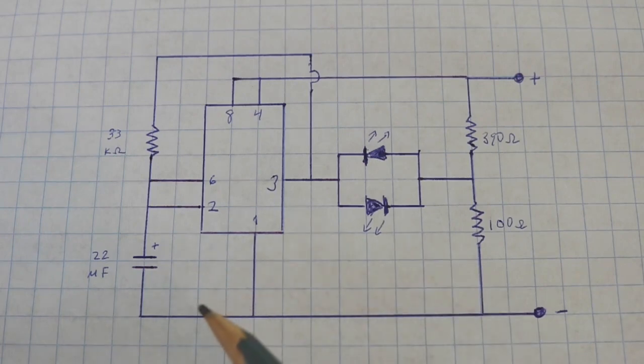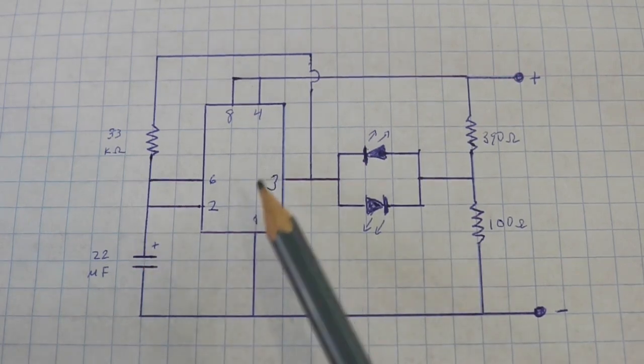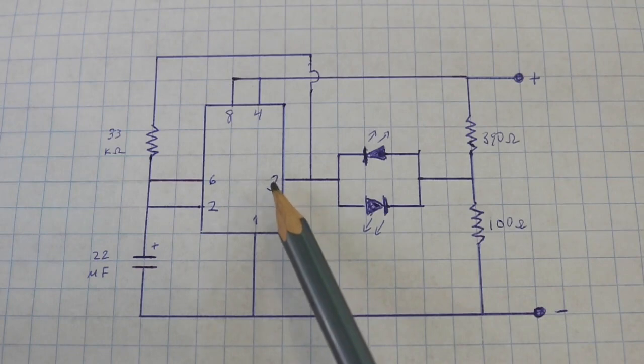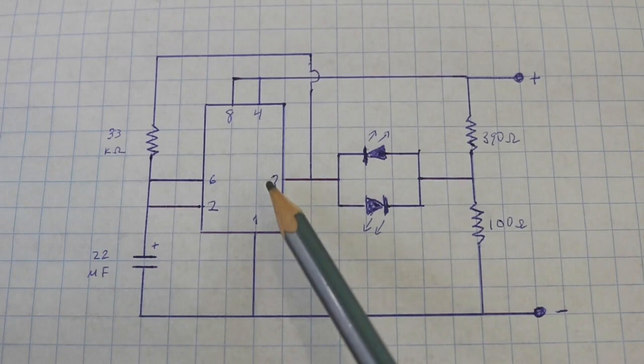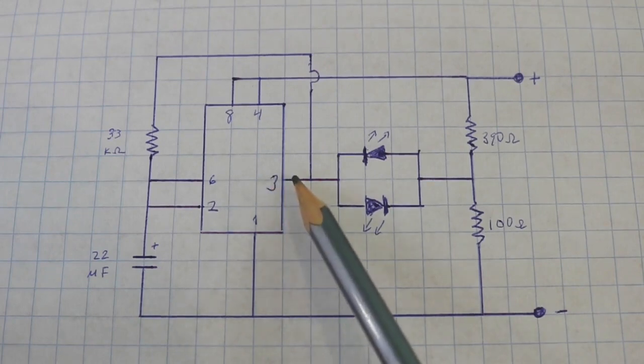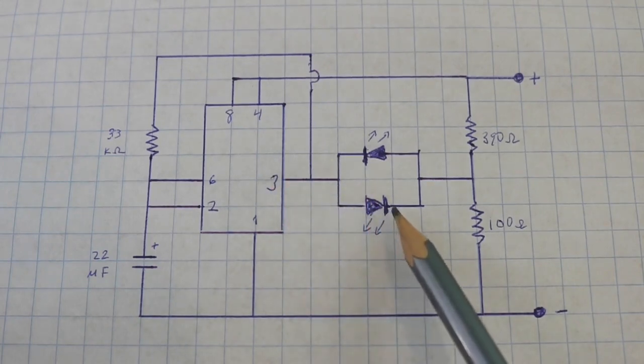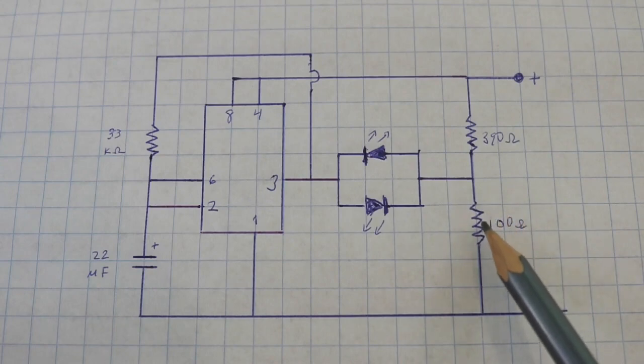And how does it work? Okay, here we have pin 3. When the output is high we have a voltage, then the current flows from pin 3 through this LED, then to this resistor and to ground.